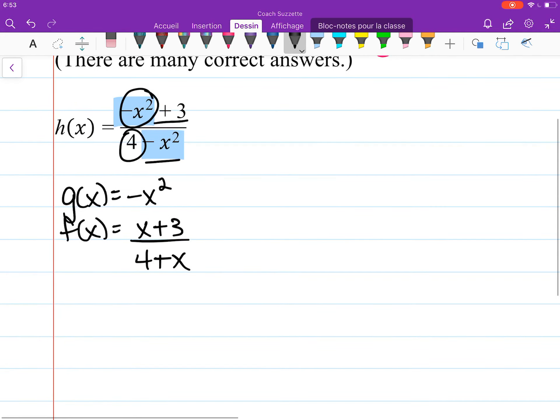Well, let's check. What's f of g of x? Well, that would be f of this, negative x squared. So that means we would substitute negative x squared here and here. So that would give us negative x squared plus 3 over 4 minus x squared, which is what we wanted.